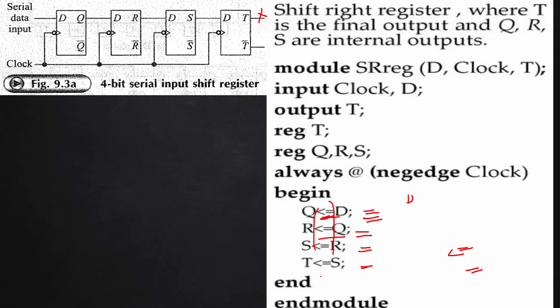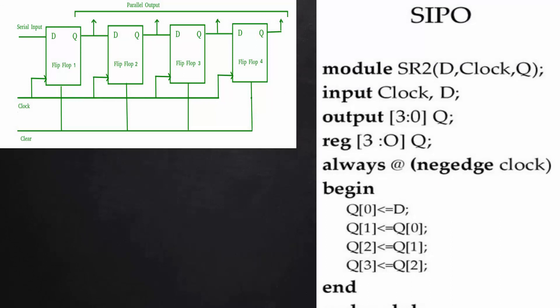This performs serial input serial output shifting. The next register is a parallel serial input and parallel output shift register, with a module having inputs d, clock, and output q. The d input and q output are 0 to 3 arrays — a total 4-bit array. The output q must be declared as a register type.